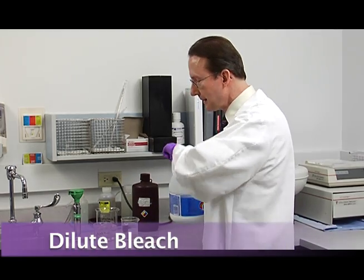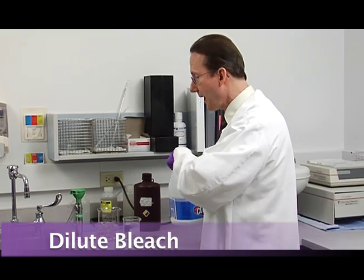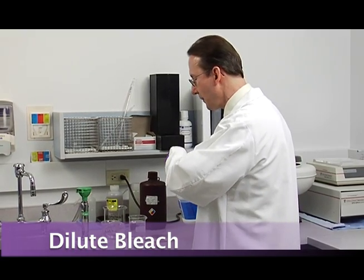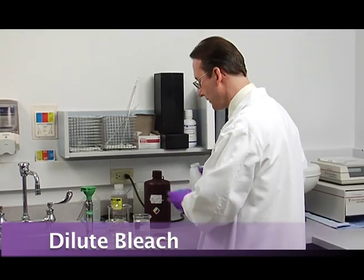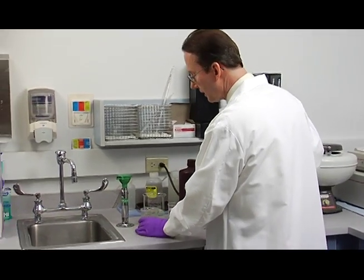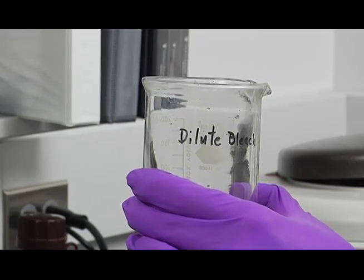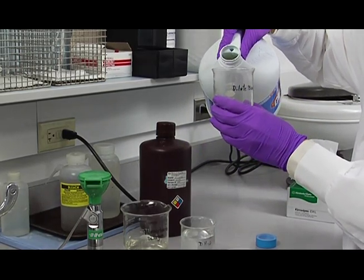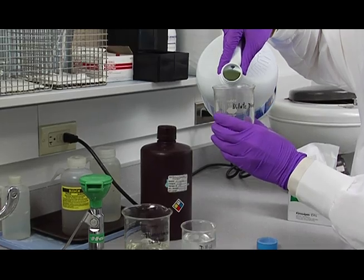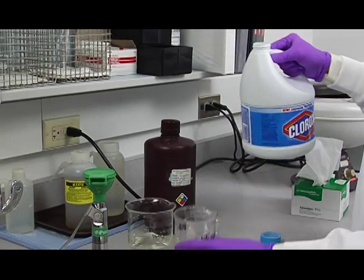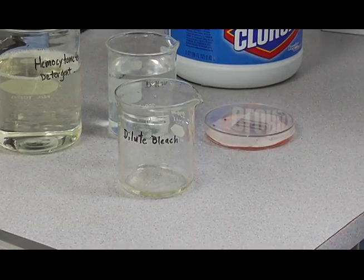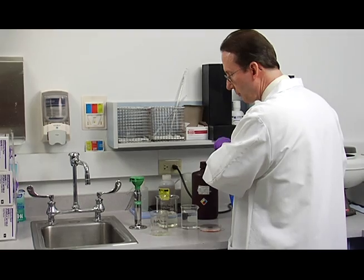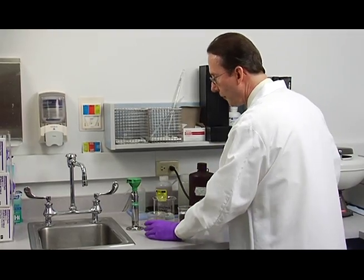The first solution is some dilute bleach to disinfect our hemocytometers when we're completed with our counts. To do that, just take your beaker. I've labeled it dilute bleach. We're just going to cover the bottom of the beaker with bleach, just enough to cover the bottom. And then we're going to fill up about three-quarters of the way with tap water.